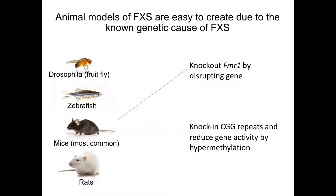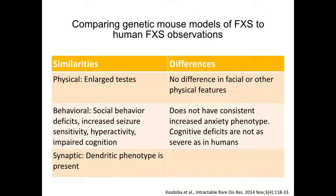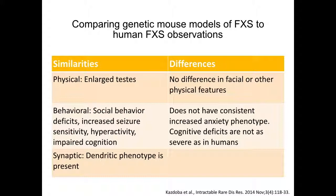Both of these approaches result in disrupted FMR1 translation. Genetic mouse models of Fragile X syndrome show similarities to the human phenotype, including enlarged testes, deficits in social behavior, attention, hyperactivity, increased seizure susceptibility, and the dendritic phenotype. Some phenotypes not seen in the animal models include no changes in facial features, an inconsistent anxiety phenotype, and cognitive deficits that are not as severe as those observed in humans.